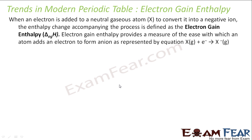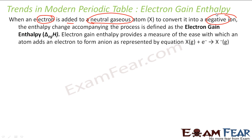Now let's discuss electron gain enthalpy. When an electron is added to a neutral gaseous atom, it converts into a negative ion. The enthalpy change in this process is called electron gain enthalpy. It provides a measure of the ease with which an electron can be added.